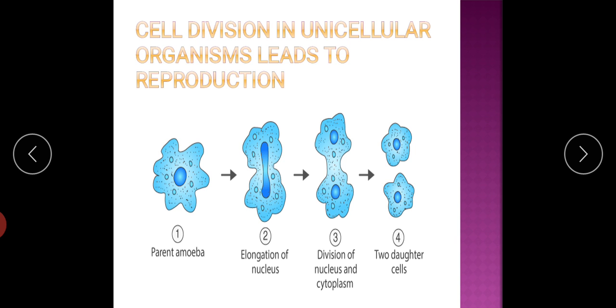Cell division in unicellular organisms leads to reproduction. Here you can see amoeba. Amoeba is a unicellular organism in which when the cell divides, you can see how the cell is dividing.